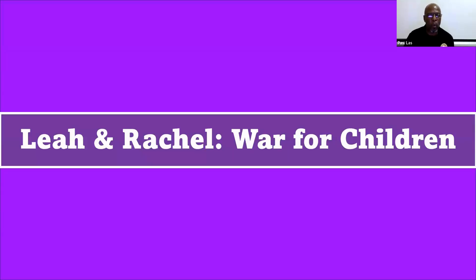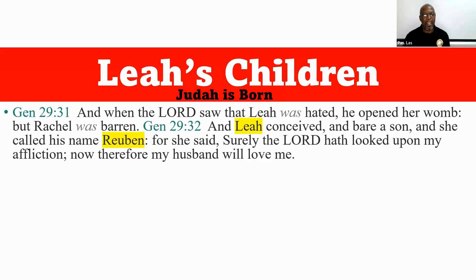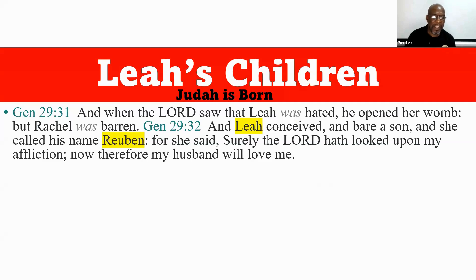Leah and Rachel were at war for the children — and when I say war, I mean war. These two women were at each other to have a child for Jacob. And when the Lord saw that Leah was hated — remember, Jacob loved Rachel — God opened her womb. But Rachel was barren. So God is working with Leah, and not so much Rachel, the one that Jacob loved.